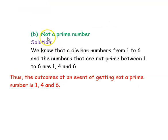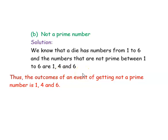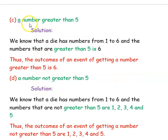The next question is to find the outcome of an event of getting not a prime number. Again, we know that a die has numbers from 1 to 6. The numbers that are not prime between 1 and 6 are 1, 4 and 6. So totally we have 3 numbers that are not prime. Thus the outcomes of an event of getting not a prime number is 3, and those numbers are 1, 4 and 6.